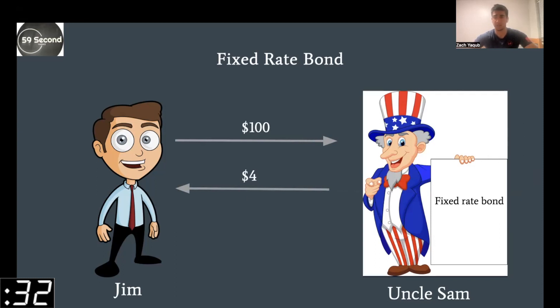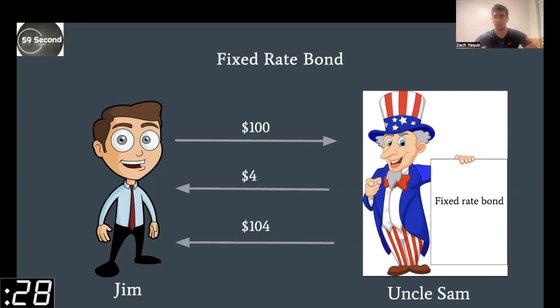On the last year, he's going to give his coupon payment and the par value back to Jim. So Jim will in total have made $40 over the 10-year period.